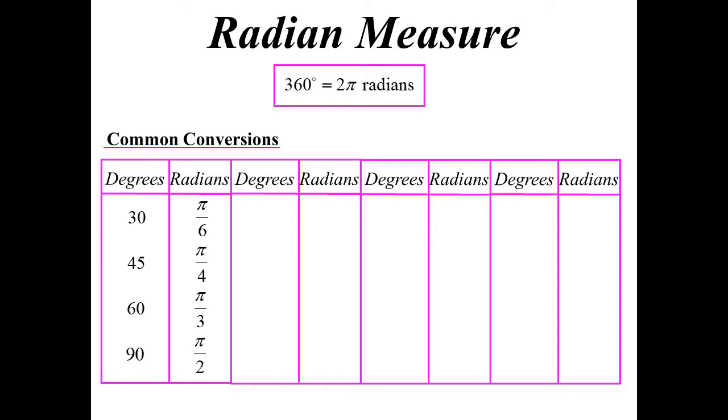Then you move into the second quadrant, and 120 would be the next one, so 2 pi on 3. 135 is 3 pi on 4, 150 is 5 pi on 6, 180 is pi.